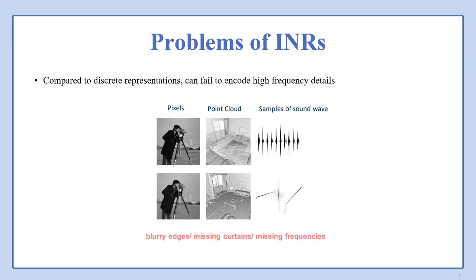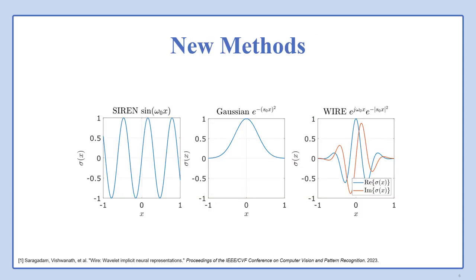However, INRs have some problems. It is proven that their tendency in ReLU-based MLPs is towards learning low-frequency information. Compared to discrete representations, they may fail to encode high-frequency details. For example, in images we have blurry edges, in point clouds we miss curtains, and in audio we miss some frequencies. New methods have been proposed to solve this problem. SIREN proposed a sine-based activation function, another method proposed a Gaussian-based activation function, and WIRE proposes a new non-linearity based on the continuous complex Gabor wavelet.